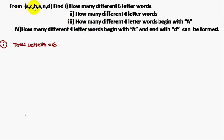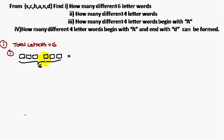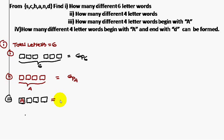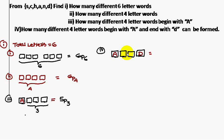If you come across the letters S, C, H, A, D — how many different six-letter words can be formed? Total letters is six, so six blanks with six letters: 6P6 ways. For four-letter words: four blanks with six letters gives 6P4. For four-letter words beginning with A: three remaining blanks with five eligible letters gives 5P3. For words starting with A and ending with D: two blanks from four remaining letters gives 4P2.